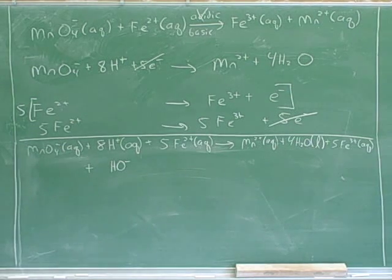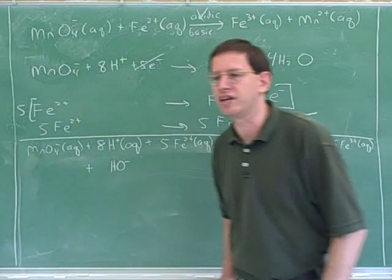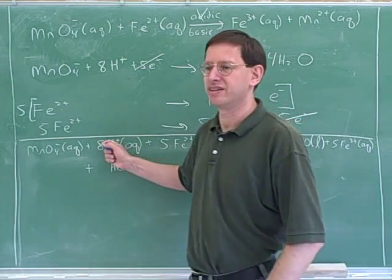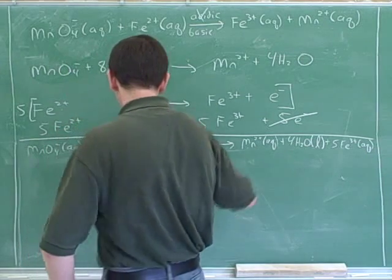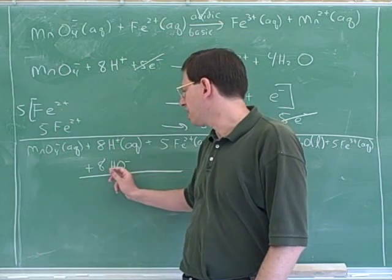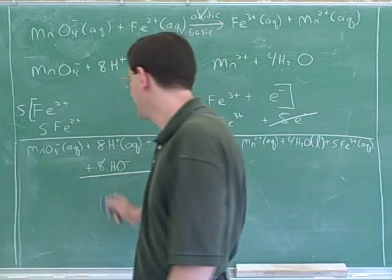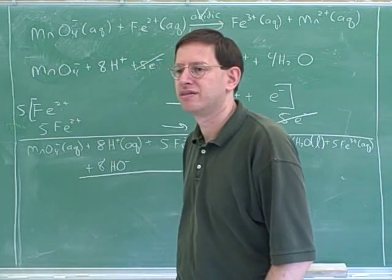Now, how many hydroxides do we need to neutralize these protons? Eight. Yeah. If we had eight, that would cancel out these. Let's see if that really works. If you add eight protons to eight hydroxides, what do you get? Eight oxygens.